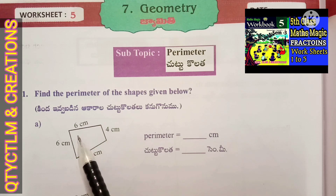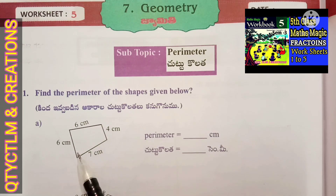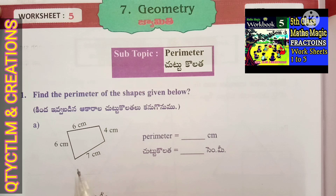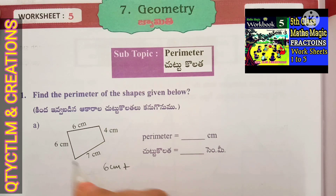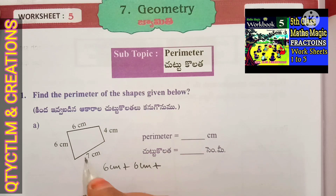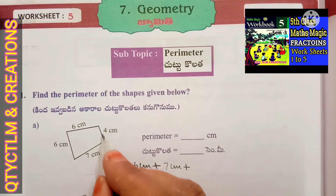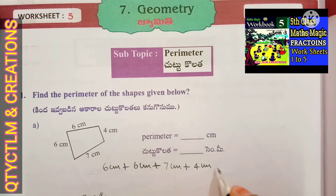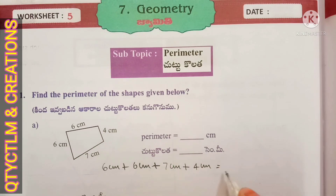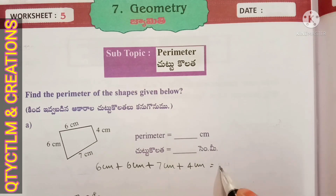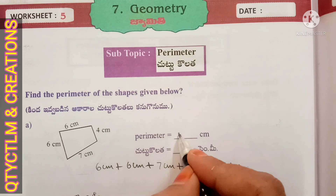So here, length of first side is 6 centimeters, plus length of second side is 6 centimeters, plus length of third side is 7 centimeters, plus length of fourth side is 4 centimeters. Total: 6 plus 6 is 12, plus 7 is 19, plus 4 is 23 centimeters. So perimeter is 23 centimeters.